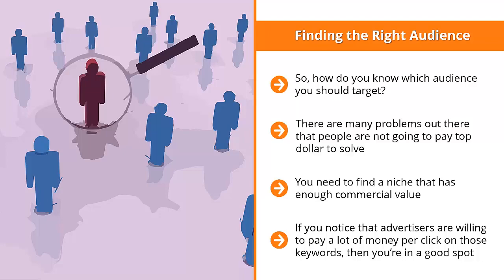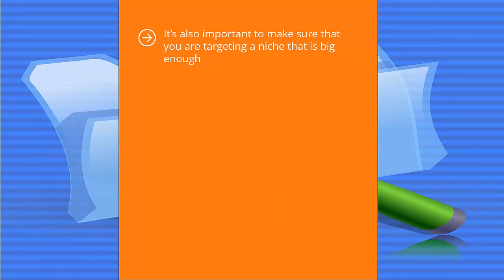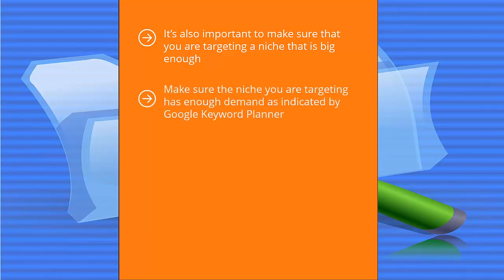People are willing to pay a significant amount of money to solve problems related to your niche. It is also important to make sure that you are targeting a niche that is big enough. There are advertisers willing to pay more than $20 per click for structured settlement keywords, but the volume of searches for that niche is actually quite low. Make sure the niche you are targeting has enough demand as indicated by Google Keyword Planner — it tells you both advertiser cost-per-click and estimated search volume. You are looking for a nice combination of decent commercial value with decent traffic volume.